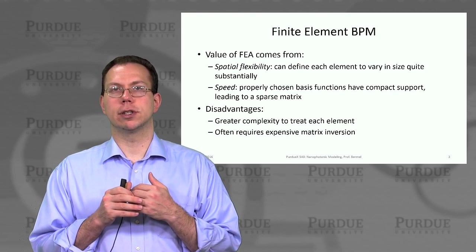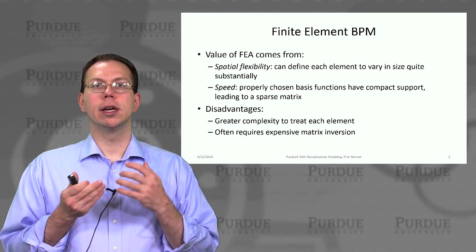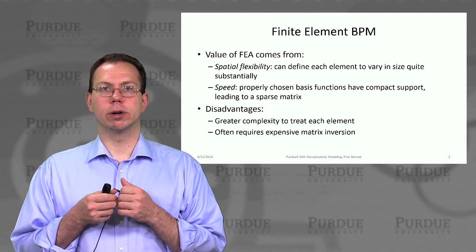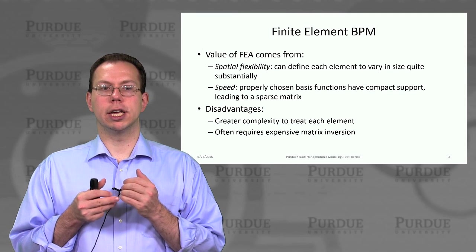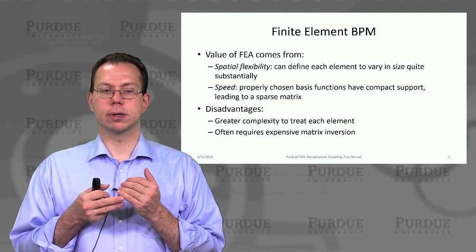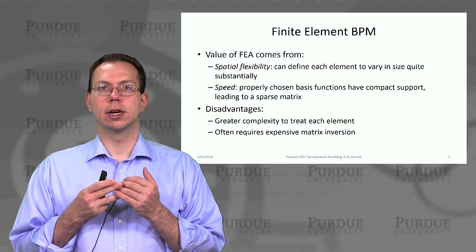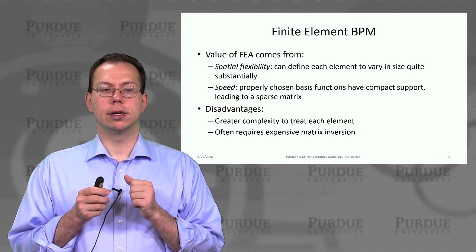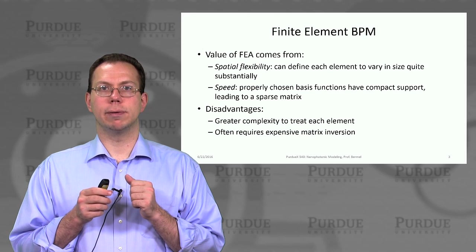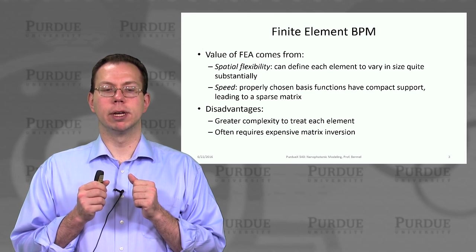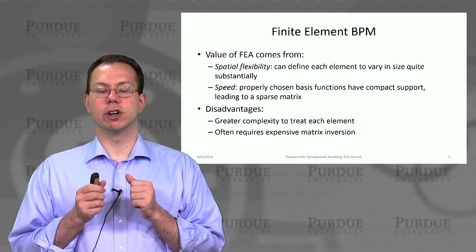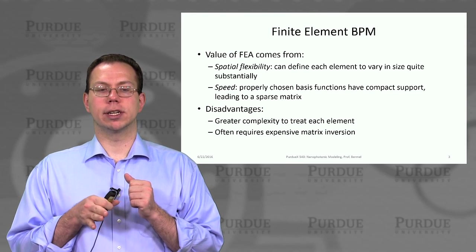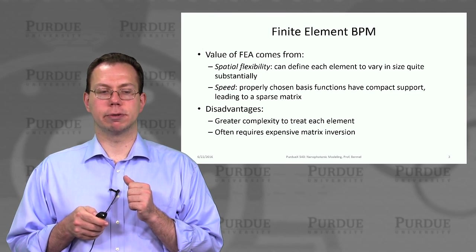Now of course there are some potential disadvantages. Mathematically, this is more complex than a uniform grid where we already are guaranteed a sparse matrix and compact support effectively in the real space grid. And another challenge which may even be more severe is that you may have to perform expensive matrix inversion. But of course having a sparse matrix can help a lot with that problem.